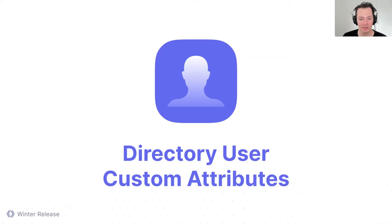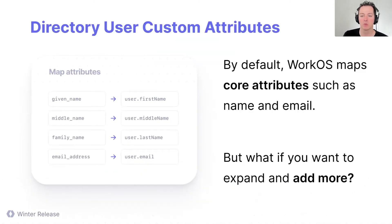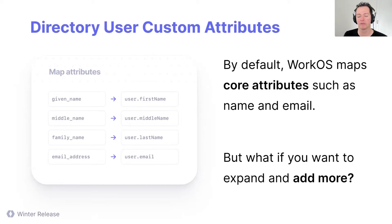We're going to talk about directory user custom attributes — we're going to get really into the weeds here. So when you sync in a directory, directories have users, and we by default map in a bunch of the common things that people need when they're using directory data: things like your first name, last name, email address, things like that. We pull those in by default based on the directory system.